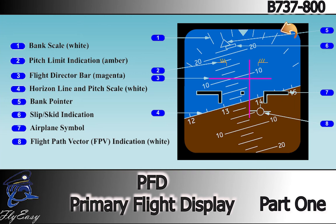Bank angle is represented by the attitude of the airplane symbol against the horizon line and pitch scale. Single marks indicate 0, 10, 20, 30, 45, and 60 degrees of bank. A small moving rectangle under the bank angle pointer indicates slip and skid conditions. The slip and skid indicator becomes filled white at full scale deflection.